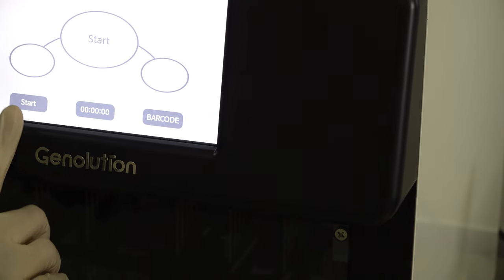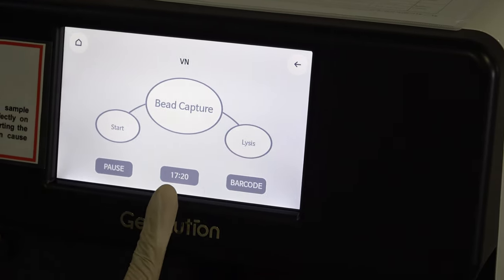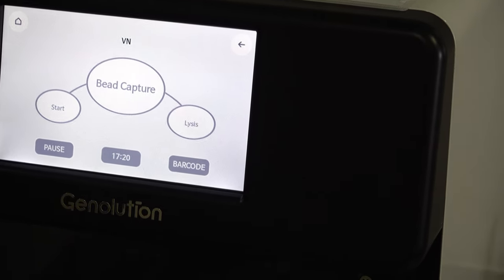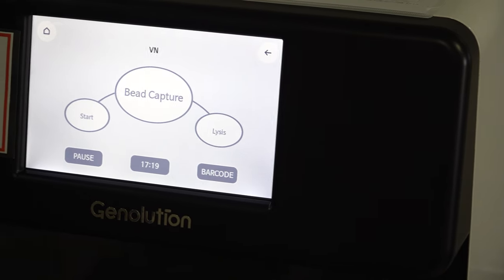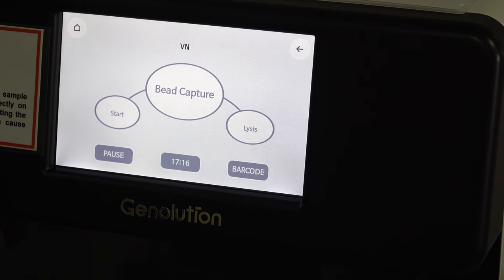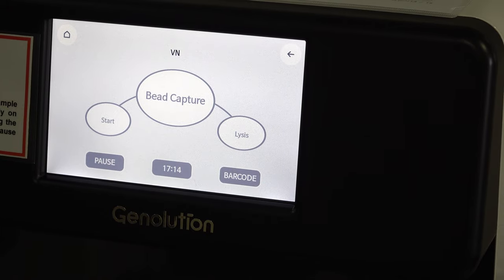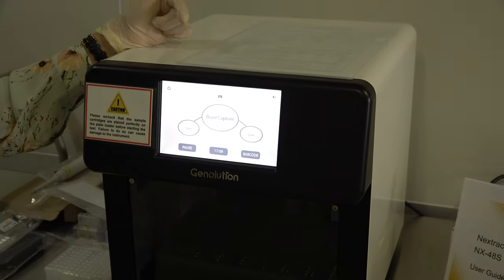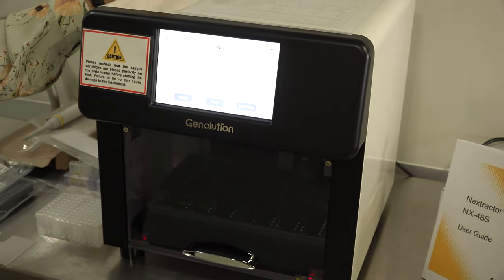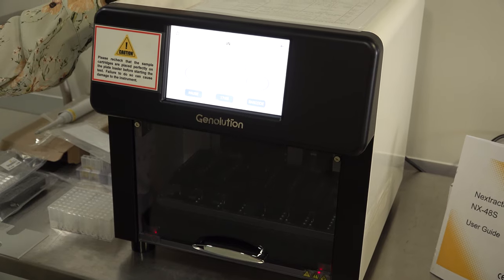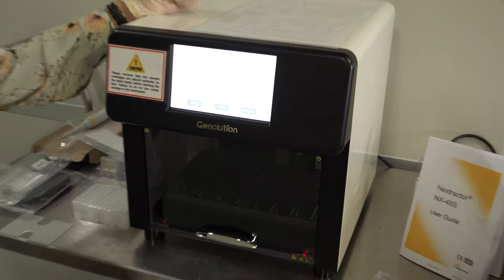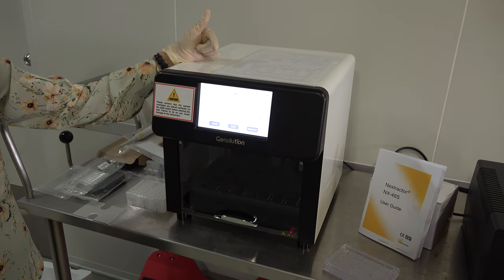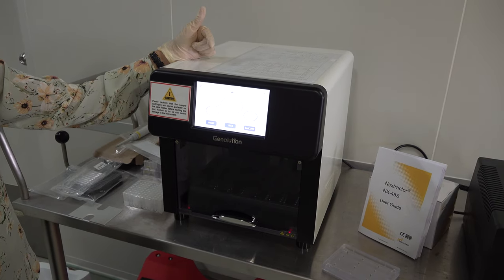This instrument will take approximately 17 minutes to complete the entire procedure from loading the sample to extraction. We click on start and the procedure will cycle through with the machine. You will start with bead capture, lysis, and then an elution step. That covers the operating procedure of this machine, the Nextractor NX48S from Genolution. Thank you for watching the video. We will proceed to the actual lab practice in our BSL-3 laboratory.